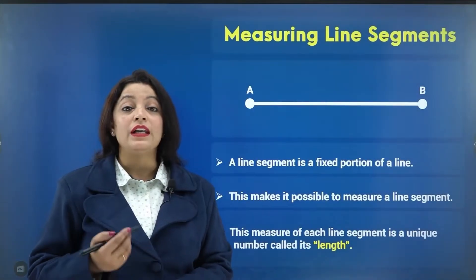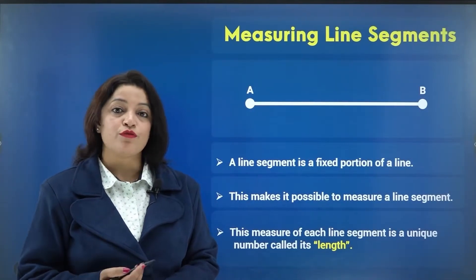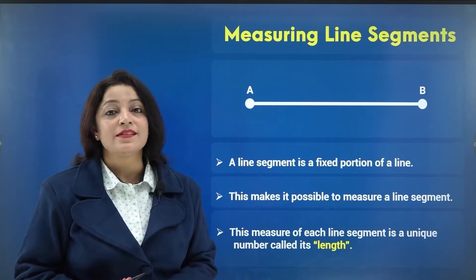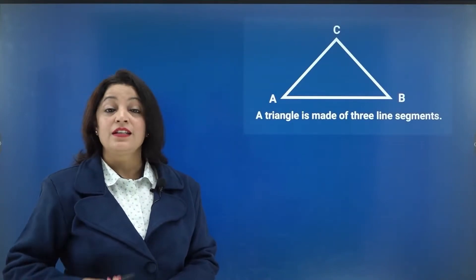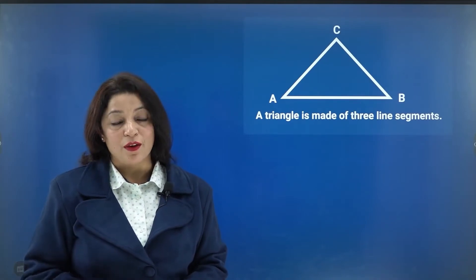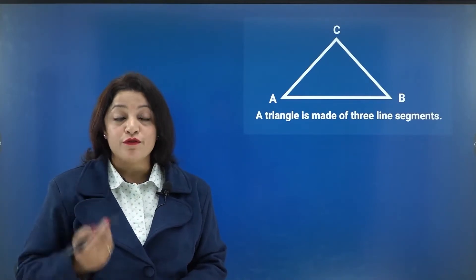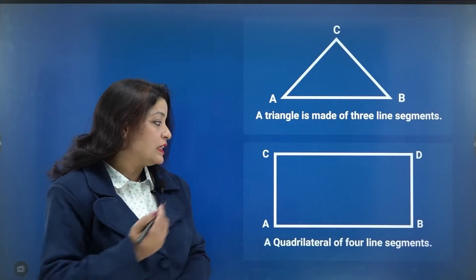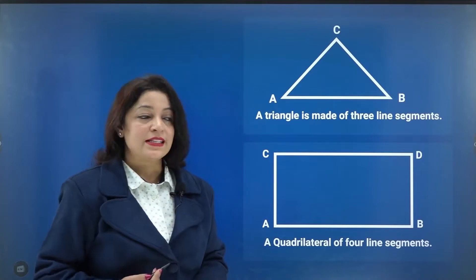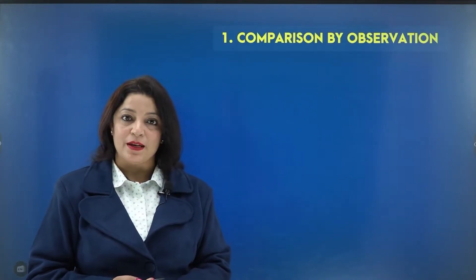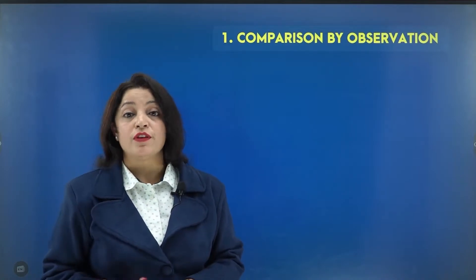A line segment can be used to form various polygons. With a combination of three line segments we can get a triangle — a triangle is made up of three line segments. In the same way, we can make a closed four-sided figure, which is a quadrilateral. A quadrilateral is made up of four line segments.